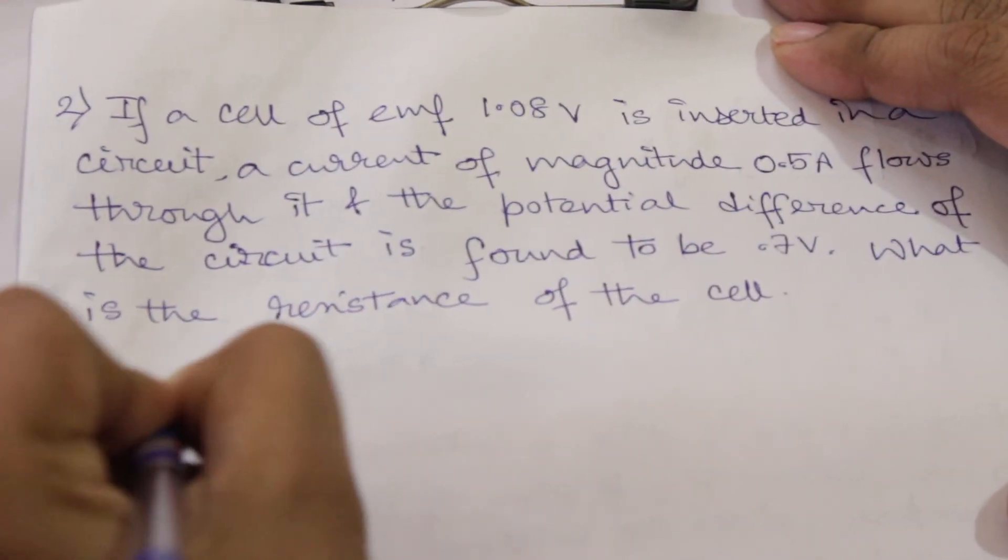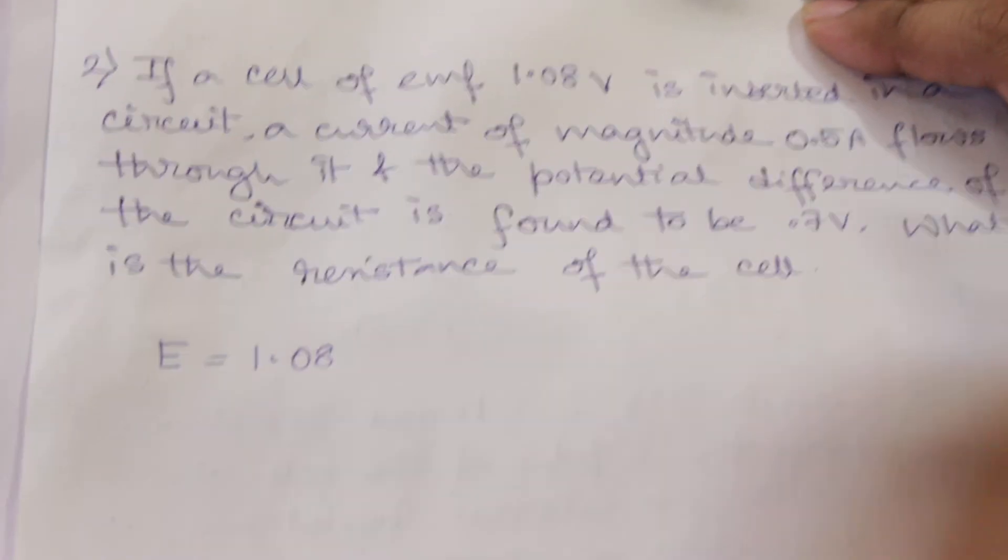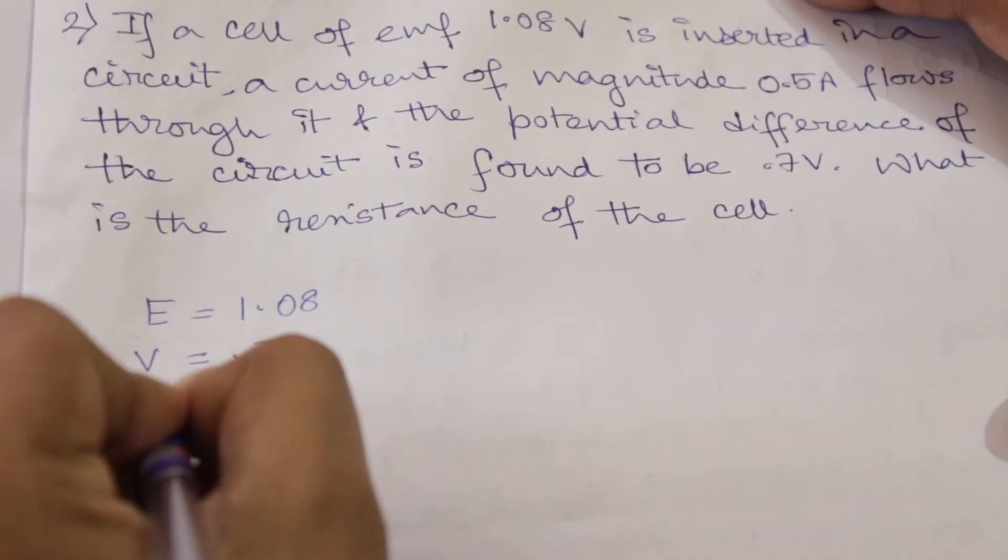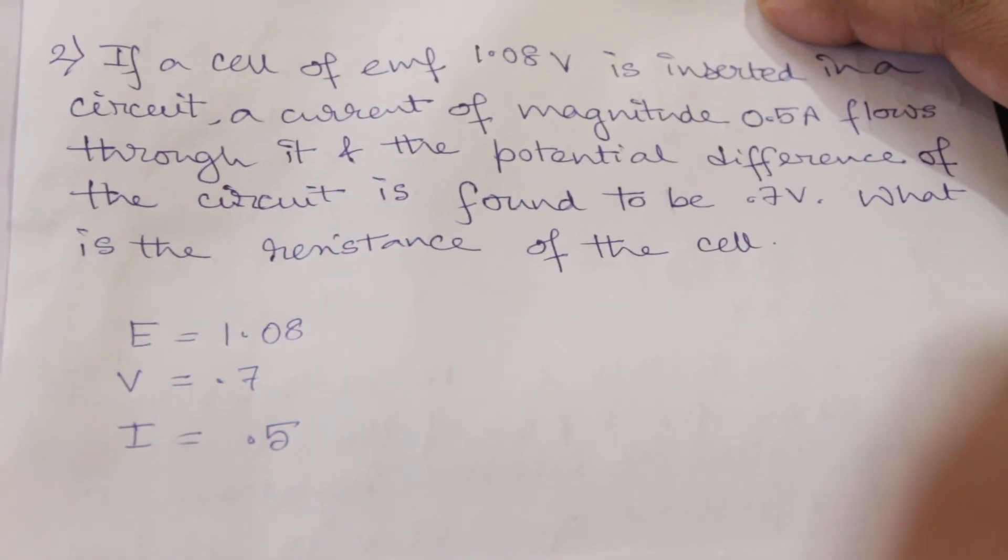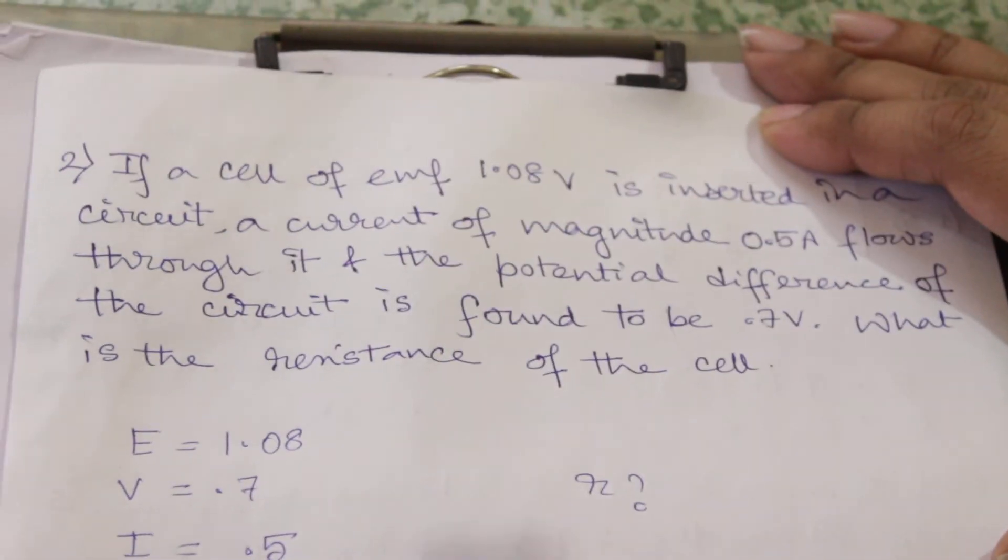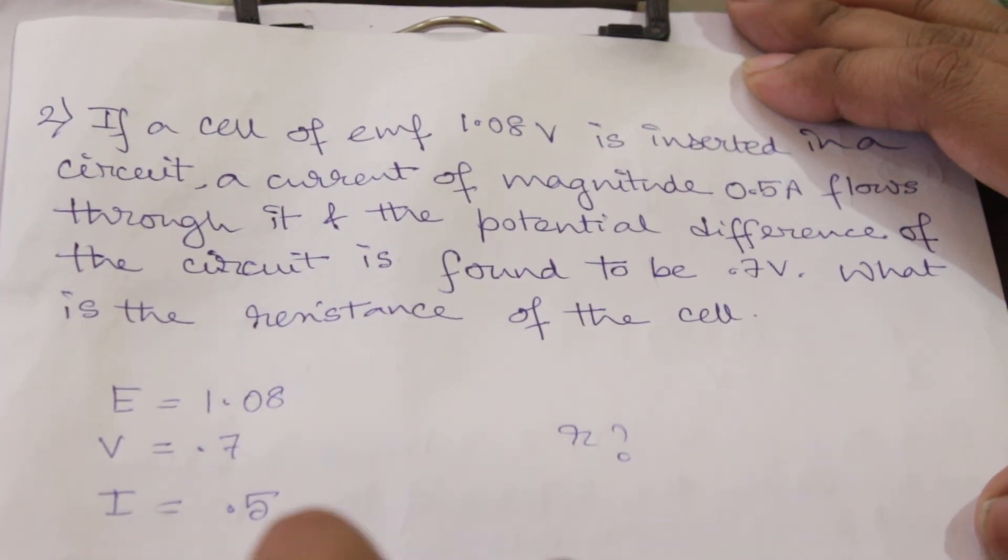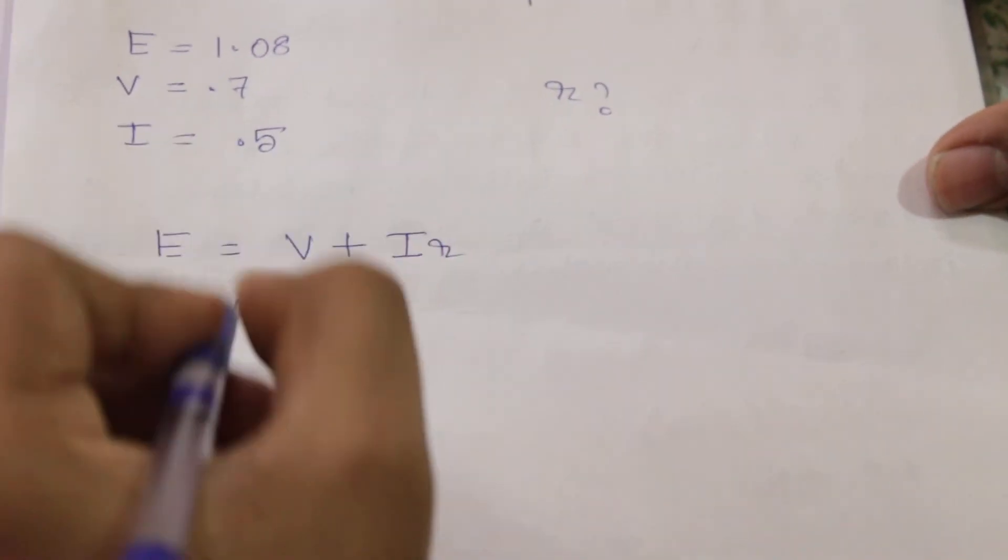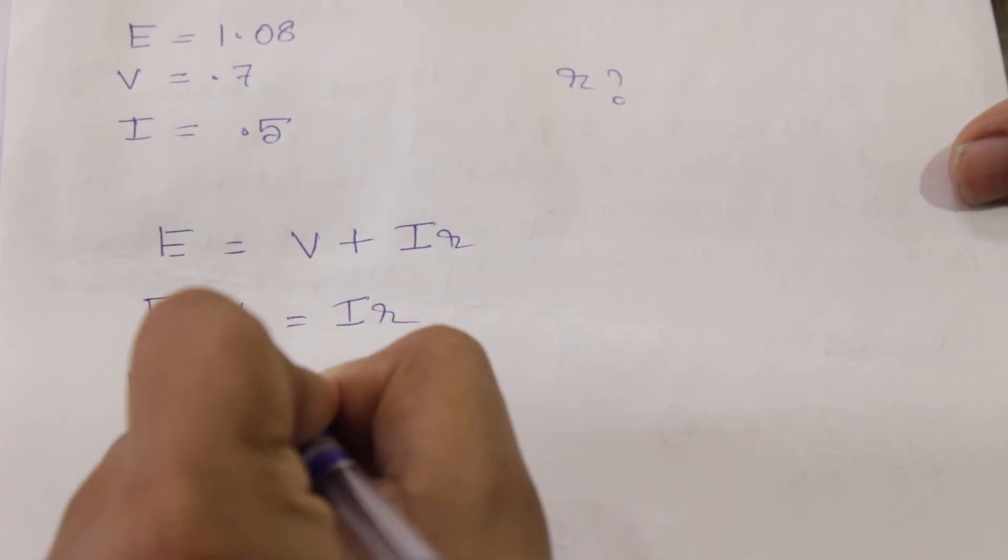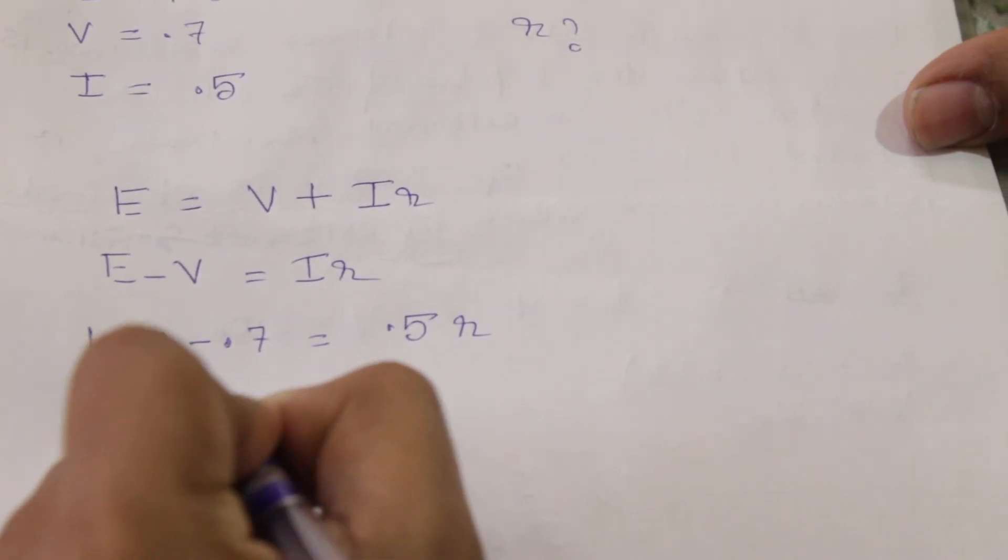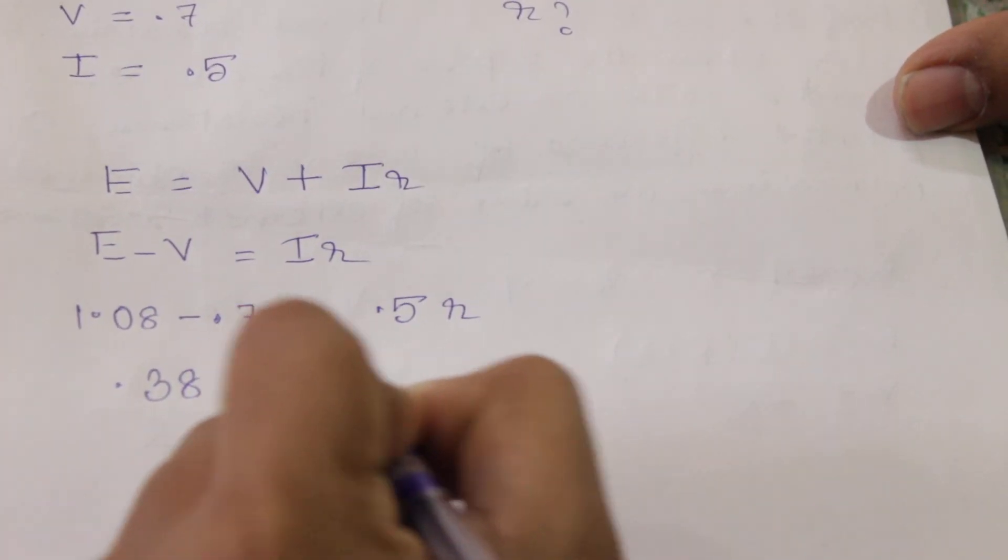So the values which are given: V is 0.7, E is 1.08, I is 0.5. We have to calculate smaller r. As I have written, EMF of a cell is equal to potential difference plus lost volt. So E minus V is equal to I into r. So 1.08 minus 0.7 equals 0.5 into r, so 0.38 equals 0.5 into r.